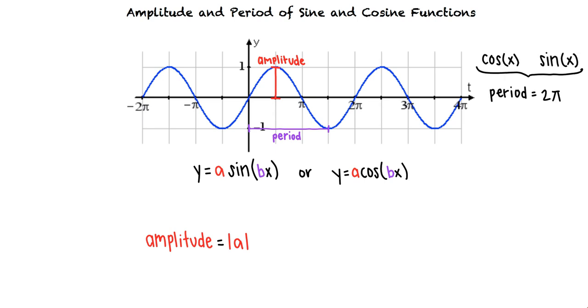For a function of the form a sine bx or a cosine bx, we can find the period as follows. The period equals 2 pi divided by b.